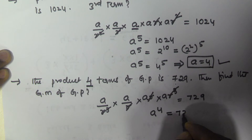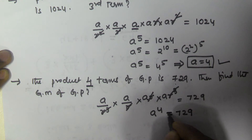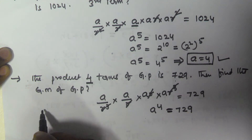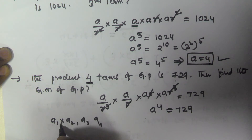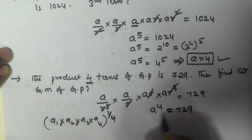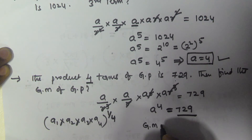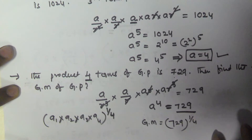So A to the power of 4 is the product of the four terms, which equals 729. The geometric mean of four terms A1, A2, A3, A4 in geometric progression is given by the multiplication of all four numbers to the power of 1/4. We already have the product of all four numbers, which is 729, so the geometric mean GM equals 729 to the power of 1/4.